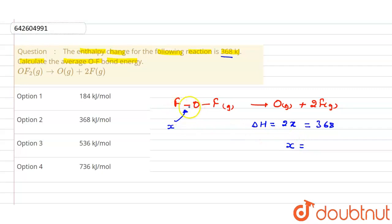That will be equals to 368 divided by 2, so that will be 184 kilojoules per mole. If you see the options, then first is the right answer. I hope you understand this concept, thank you.